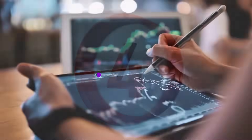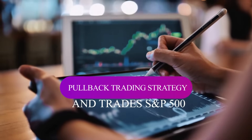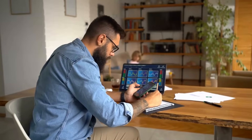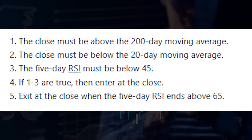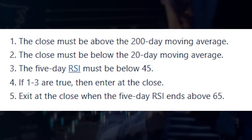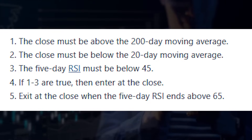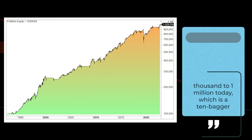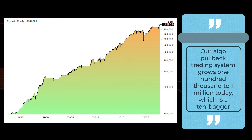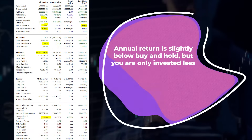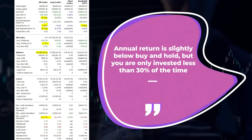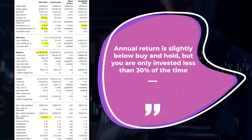Let's look at our fourth algorithmic trading strategy. This is a pullback trading strategy that trades S&P 500. The trading rules are simple. The main idea is to have a trend filter — the 200-day moving average — to make sure we're in a long-term bullish trend. For the short term, we want to buy on weakness or a pullback. Our algo pullback trading system grows $100,000 to $1 million today, which is a 10-bagger. Annual return is slightly below buy-and-hold, but you're only invested less than 30% of the time.